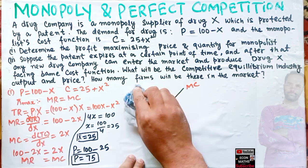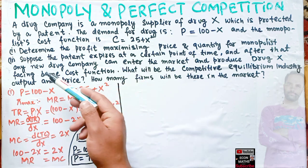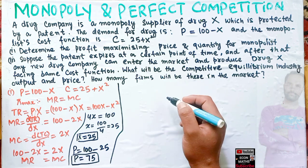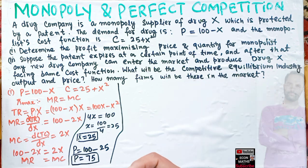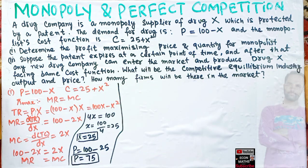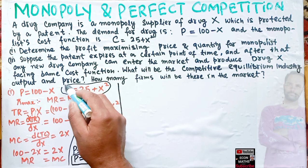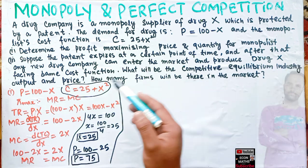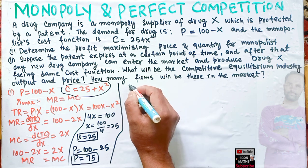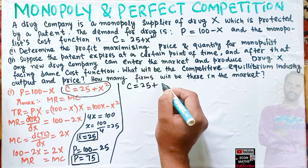Now coming to the perfect competitive output. If the patent expires, there is no restriction to enter the market, so any firm can enter. Any new drug company can enter the market and produce drug X facing the same cost function. We need to find the competitive equilibrium industry output and price.